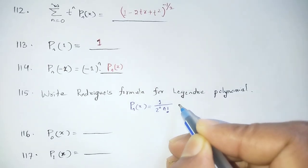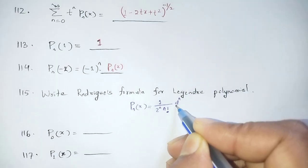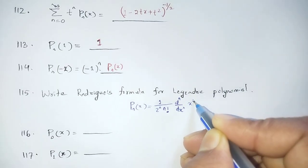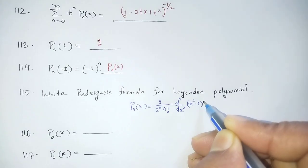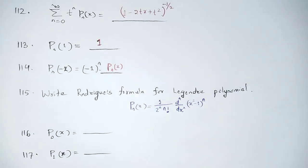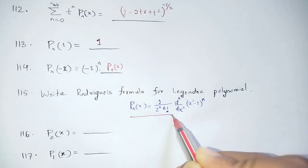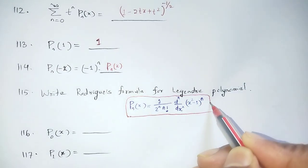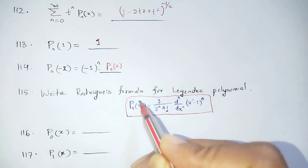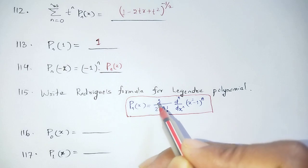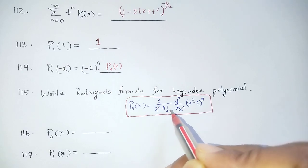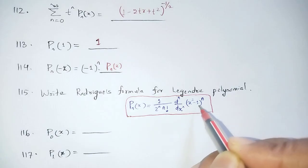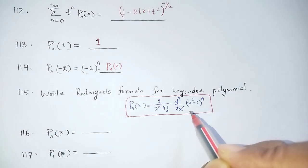The Rodrigue formula for Legendre Polynomial Pn(x) is: Pn(x) = (1 / (2^n · n!)) · (d^n/dx^n)(x² - 1)^n. This is the nth order differentiation formula used to find Legendre Polynomials.